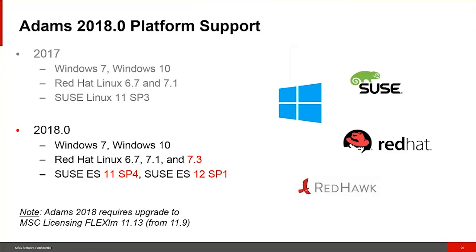Finally, platform support: in ADAMS 2018.0 we're continuing to support Windows 7 and Windows 10, adding several new Linux platforms listed in the release notes, and dropping CentOS 6 SB3 this release. Also, ADAMS 2018 requires an upgrade to the MSC licensing product FlexLM — upgrading from version 11.9, where we've been for a number of years, to version 11.13. There are bold red-letter notices in the product info doc and release guide covering this. Be sure to do that when you upgrade to ADAMS 2018.